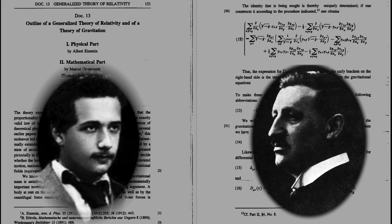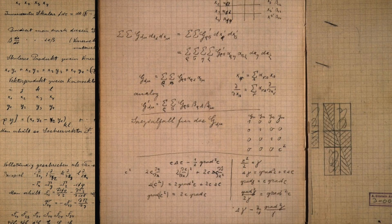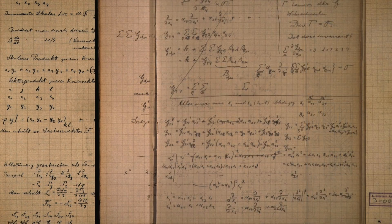Ironically, the failure of the early test of his theory turned out to be a miracle for Einstein's career. Indeed, in 1915, while experimenters still couldn't perform their observations, Einstein realized that his computations were flawed. In a rush, he searched for a fix for his theory.